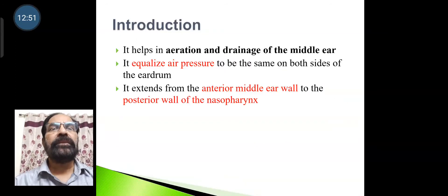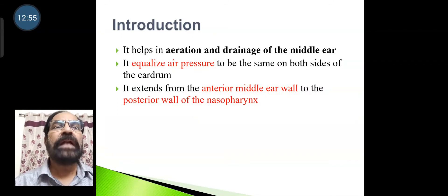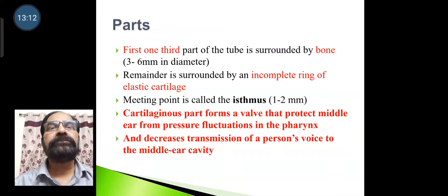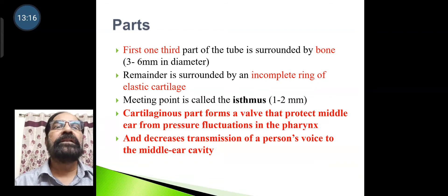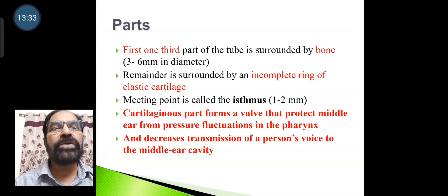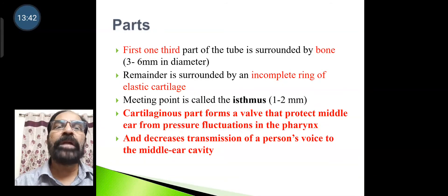The auditory tube helps in aeration and drainage of the middle ear, equalizing air pressure on both sides of the eardrum. It extends from the anterior middle ear wall to the posterior wall of the nasopharynx. The first one-third is surrounded by bone (3–6 mm in diameter); the remainder is surrounded by an incomplete ring of elastic cartilage, and their meeting point is called the isthmus. The cartilaginous part forms a valve that protects the middle ear from pressure fluctuations in the pharynx and decreases transmission of a person's voice to the middle ear cavity.